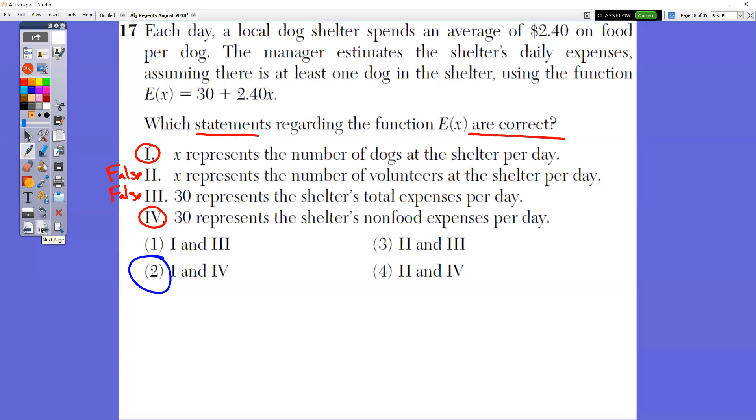In question number 17, which statements regarding the function E are correct? So you want to know which statements are true. Each day at a local dog shelter spends an average of 240 per dog. So 240 times the number of dogs. And then there's this $30. Well, that plus $30 represents all their other expenses. So maybe like water and electricity and maybe heat, things like that. So which statements are true? It would be one and four are true. X represents the number of dogs and 30 represents the non-food expenses. So that'd be choice two because one and four are correct.